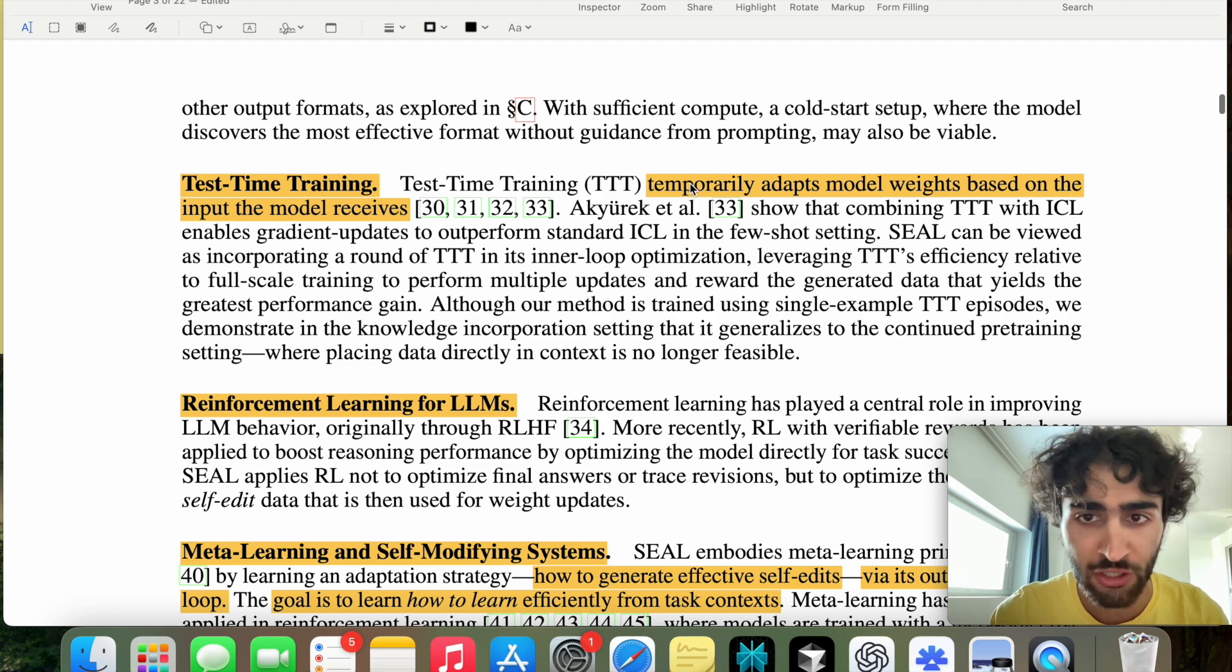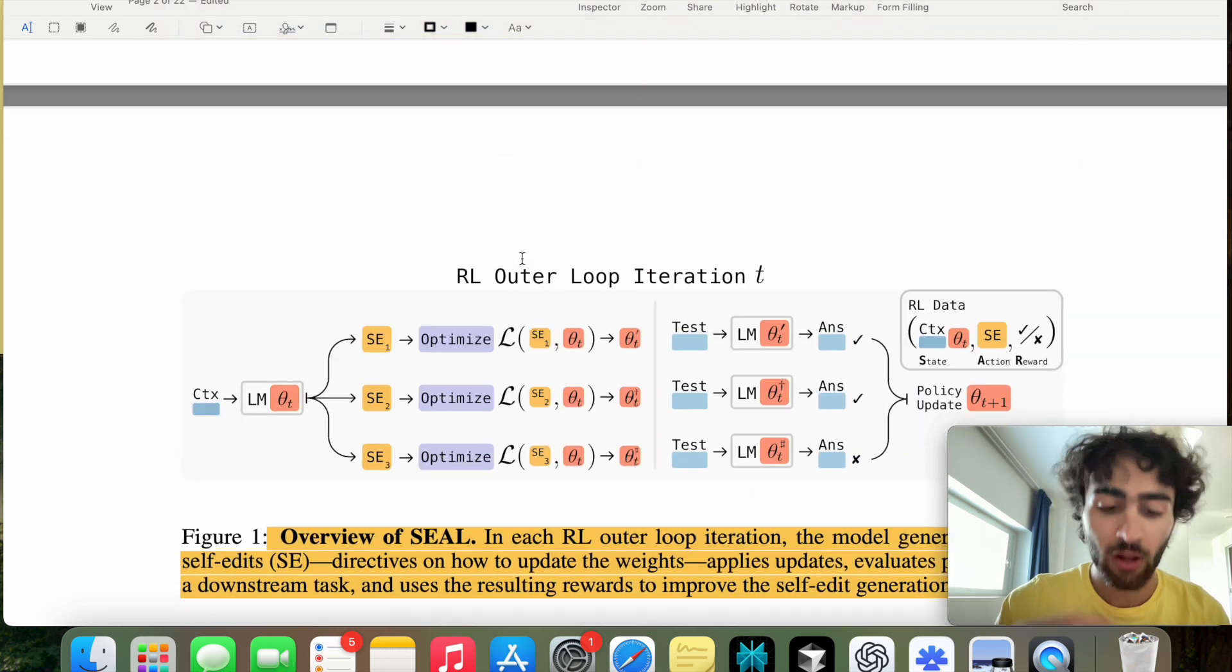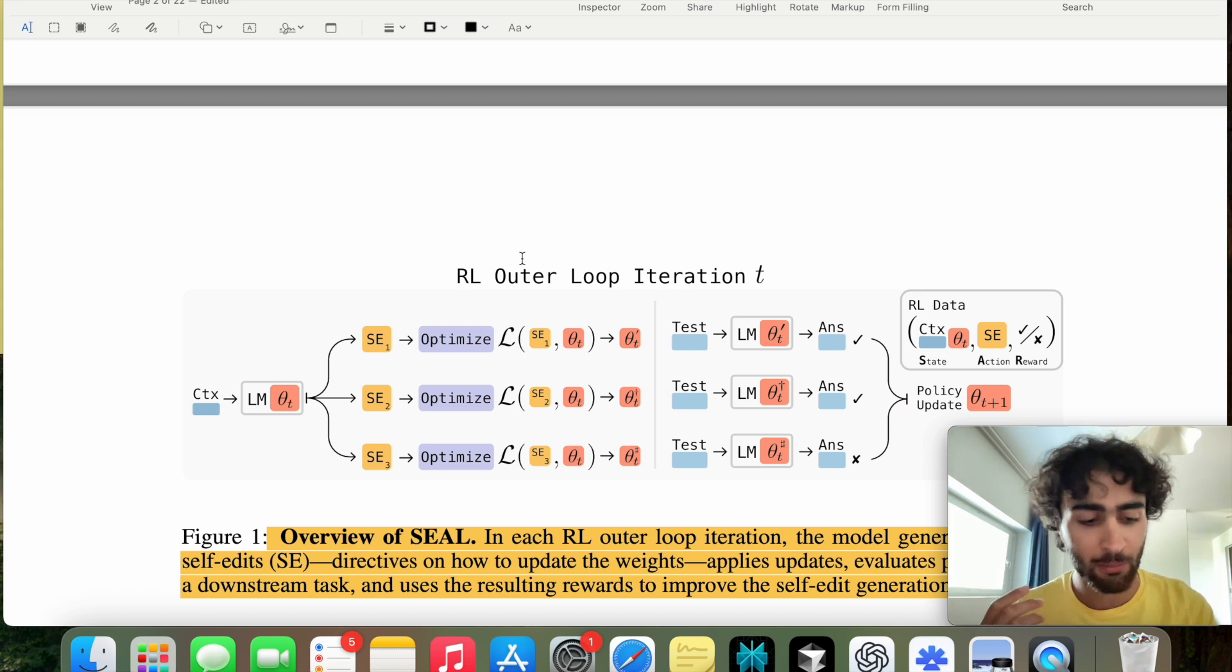Then we talk about test time training, which is saying, temporally adapting model weights based on the input the model receives. And this is a LoRa adapter head fine-tuning paradigm. So if you've used Unsloth before, for example, this is essentially what you do for supervised fine-tuning. You just change the LoRa adapter head because it is very cheap, fast, and reversible way to fine-tune.